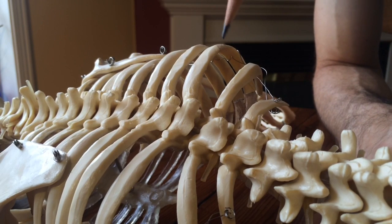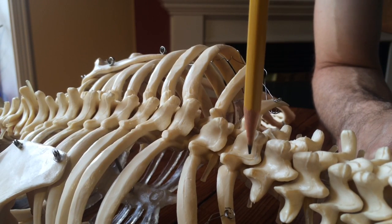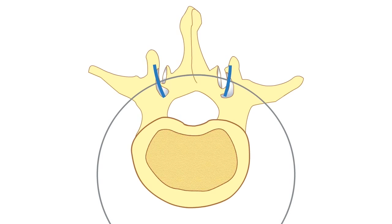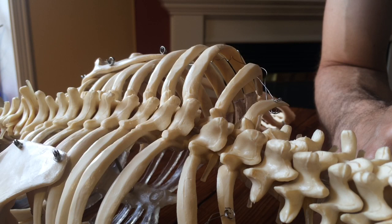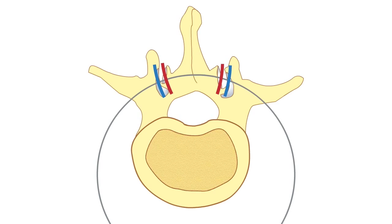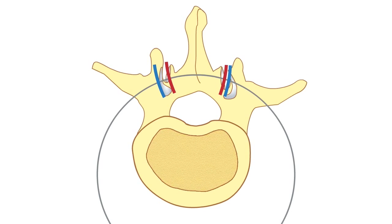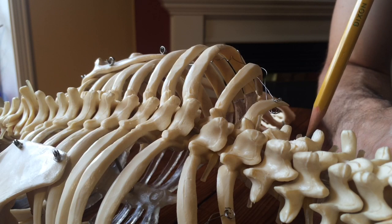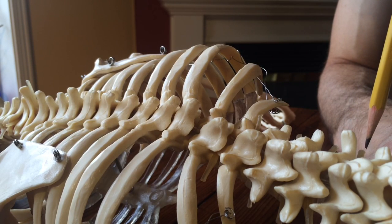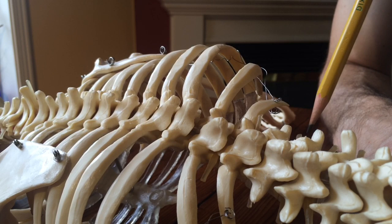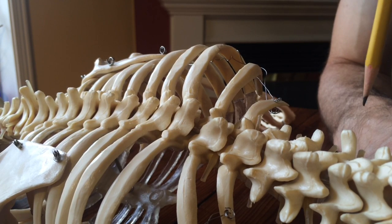In the lumbar spine however things are very different. The superior articular facet sits inside of the inferior articular facet, kind of like a cup, and this almost completely prevents rotation of the lumbar spine — which is great because you have a whole bunch of tubes and stuff down here that you really don't want to get all twisted up by overturning your lumbar spine.